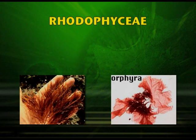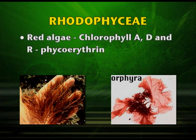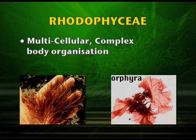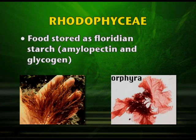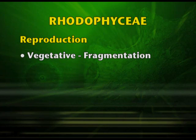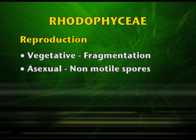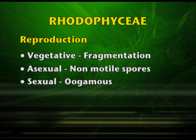Rhodophyceae are generally known as the red algae and they contain the pigments chlorophyll A, D, and R-phycoerythrin. The cell wall is made up of cellulose. They are multicellular and have a complex body organization. The food stored is in the form of floridean starch. Vegetative reproduction is by fragmentation. Asexual reproduction is by non-motile spores and sexual reproduction is oogamous.